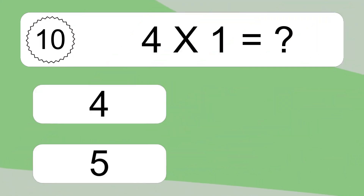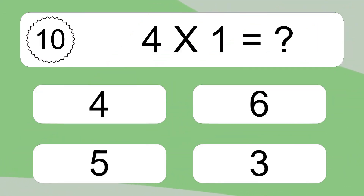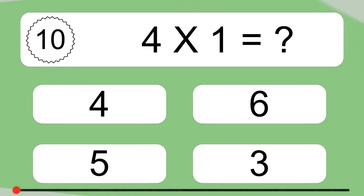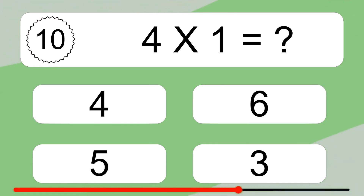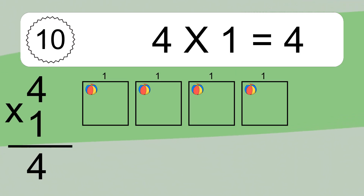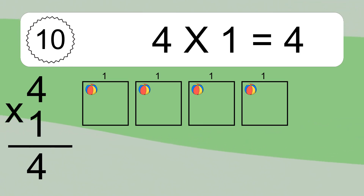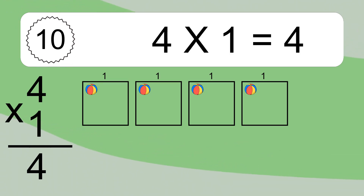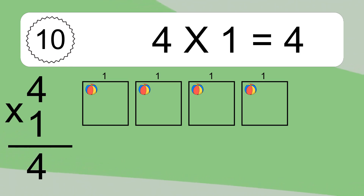Four times one equals what? Four times one equals four. We have four boxes and each box has one colorful ball inside. If you count all the balls in all the boxes together, you will have four times one balls. This equals four balls.